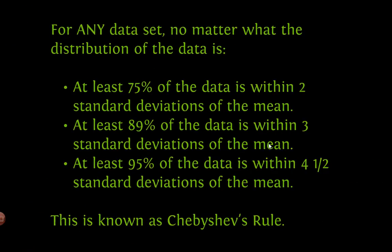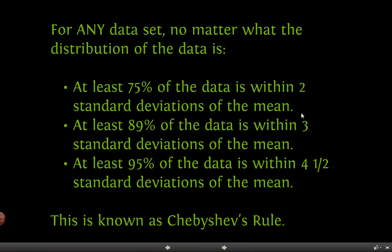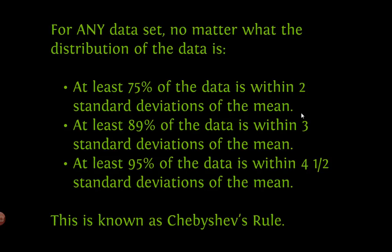Chebyshev's rule states that no matter what distribution you have, at least 75% of all data is within two standard deviations of the mean. At least 89% of the data is within plus or minus three standard deviations — take the mean, multiply the standard deviation by three, add it and subtract it from the mean. And 95% of the data is within four and a half standard deviations.